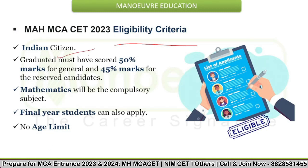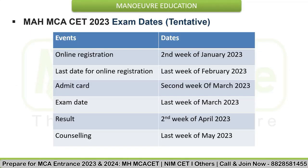Let's discuss the eligibility criteria for MCA CET 2023. Candidates should be Indian citizens. The candidate must be a graduate from a recognized university with a minimum of 50% marks for general category and 45% for reserved candidates. Candidates must have studied Mathematics as one of the subjects at the 10+2 level or at the graduation level. Candidates in the final year can also apply on a provisional basis — provisional basis certificates can be submitted within one or two months. There is no age limit.